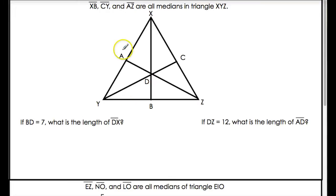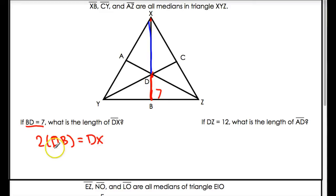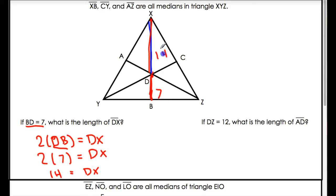Next problem: XB, CY, and AZ are all medians of triangle XYZ. If BD equals seven, what is the length of DX? BD is the smaller segment from the centroid to the side. Two times the smaller part equals the bigger part, so two times DB equals DX. DB is seven, so DX equals fourteen. DX is just twice the length of the smaller part.